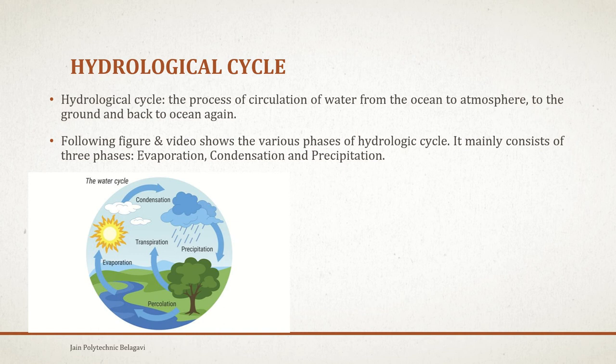In evaporation, sunlight produces heat, and the heat produces a difference in pressure. Because of that difference in pressure, the water gets evaporated — that process we call evaporation. The next phase is condensation — it is the merging of different particles, like minor dust particles and water vapors, forming a cloud or a flock. That we call condensation.